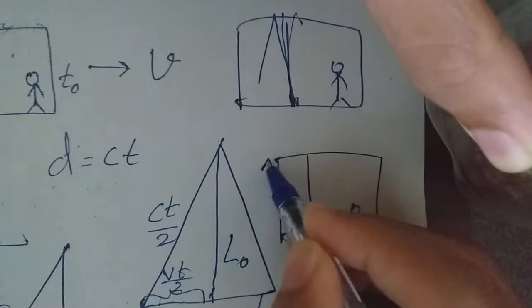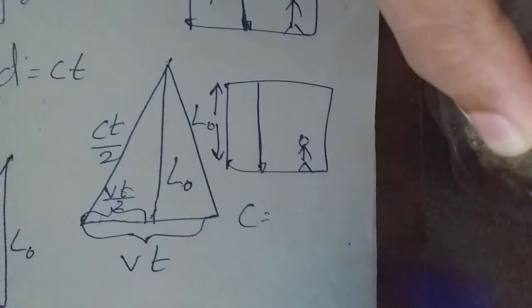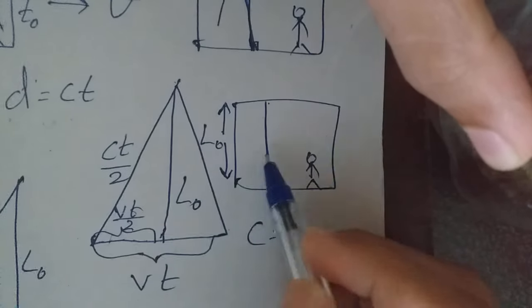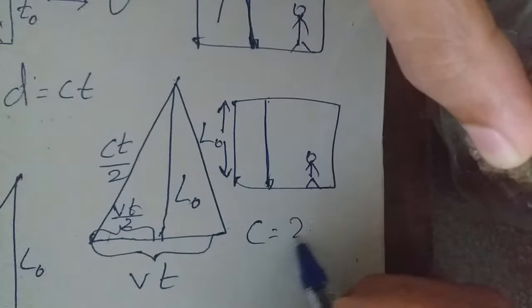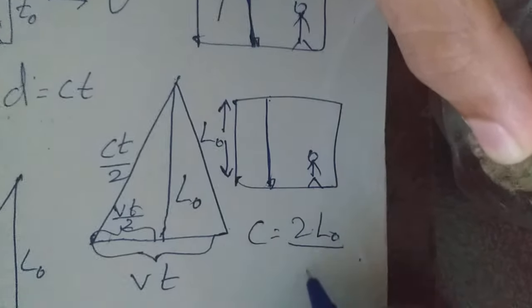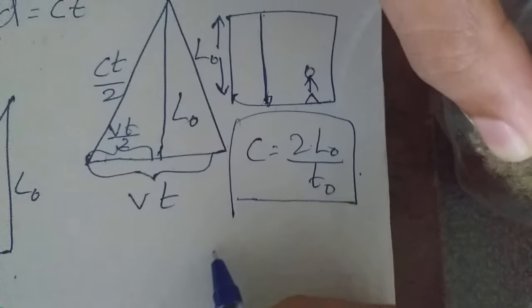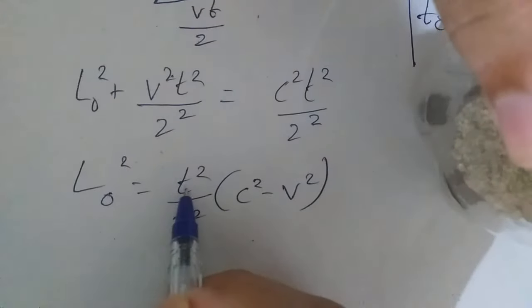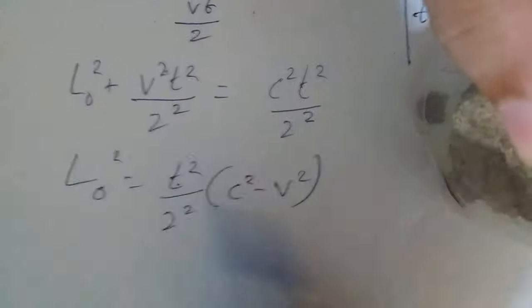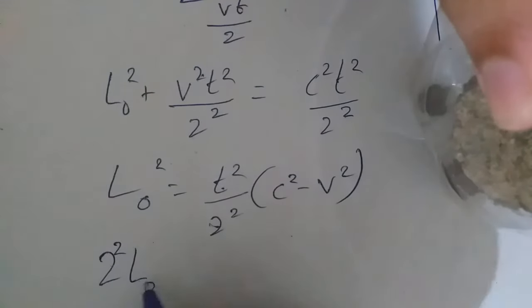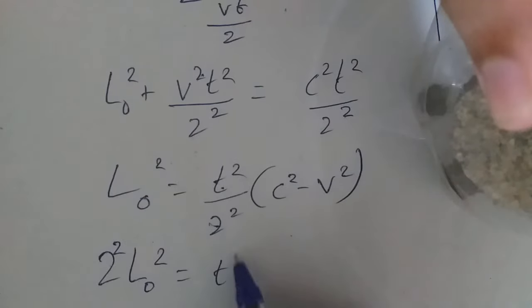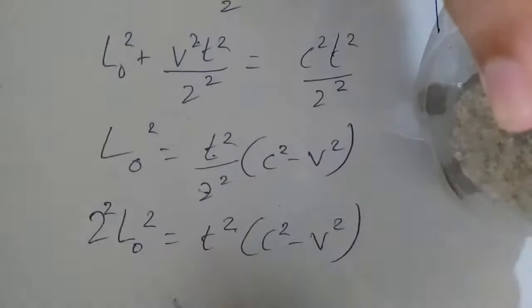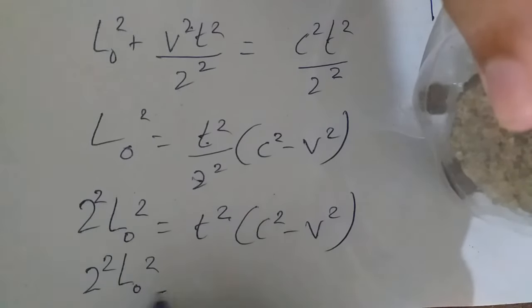We go by and move the length. The length is L0. The velocity is the time. L0 is L0; 2L0 is the total distance. The total distance is L0, the time is T0. C is equal to 2L0, so T0 is equal to 2L0 by C. We have 2L0 squared equal to t squared into c squared minus v squared.